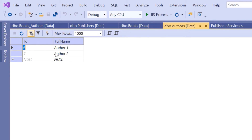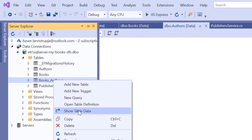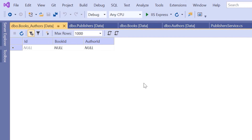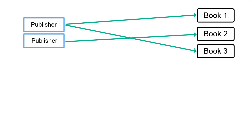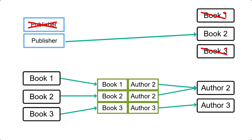If we go to the BooksAuthors table in the Solution Explorer, we can see that the relationship between the books and the authors is removed. Basically, Entity Framework Core is smart enough to know when we have a one-to-many relationship and when we have a many-to-many relationship. If the relationship is one-to-many, then when you remove the parent entity, the children entities will also be removed. But when you have a many-to-many relationship, only the relationship will be removed.